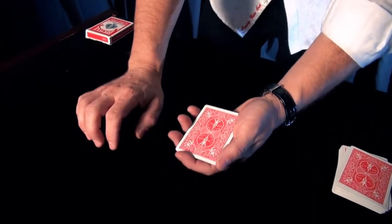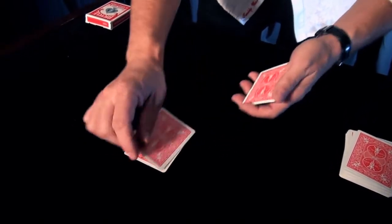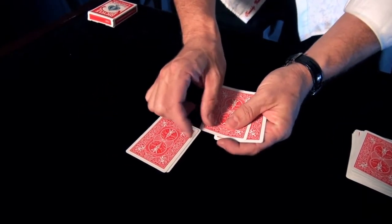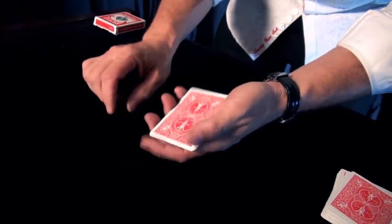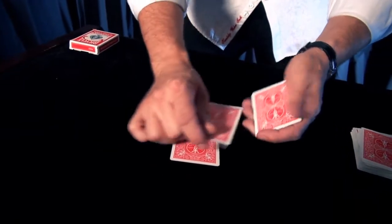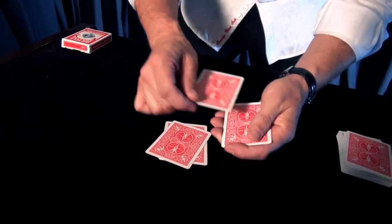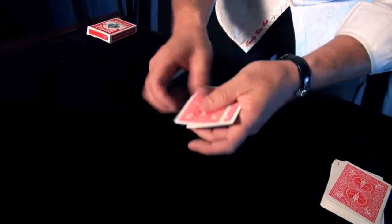The first technique that we can use is called a crimp. And here's what a crimp is. A crimp is whenever you place a tiny bend in the corner of a playing card. Now why is that important? If you have a tiny bend in the corner of one of those aces, if I was dealing these cards, as I deal through the cards, once I feel that tiny bend, I can then deal that card to myself. That technique is known as the crimp.